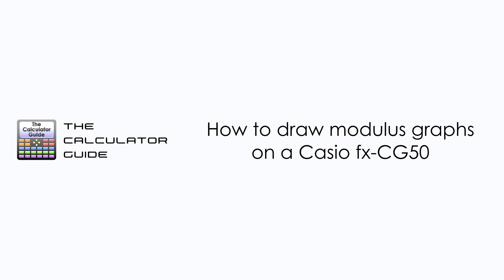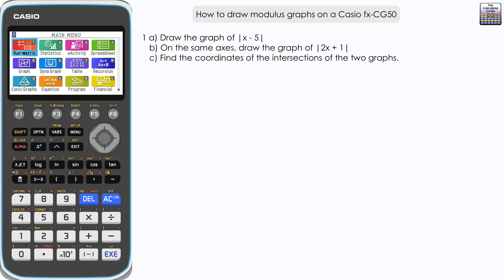Hello and welcome to the calculator guide video on how to draw modulus graphs on a Casio FX CG50. We are going to draw the graph of the modulus of x minus 5 and on the same axes draw the graph of the modulus of 2x plus 1, and then find the coordinates of the intersections of the two graphs.